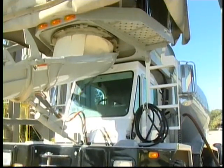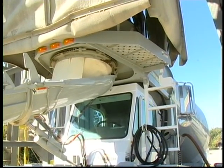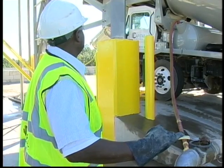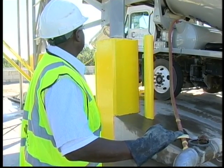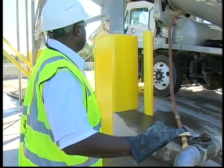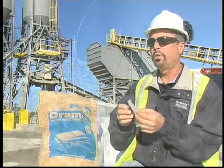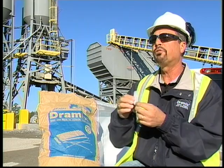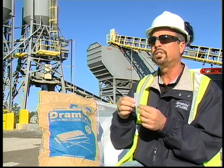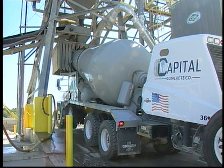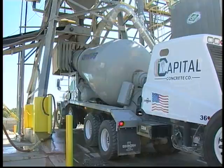At a ready-mix plant, what does it take to thoroughly mix the fibers into the concrete mix going into the ready-mix truck? Are the fibers multi-directional in the mix and ultimately cured concrete? They're mixed intricately throughout the concrete. It only takes 70 revolutions or four minutes to mix the fibers front to back.